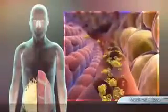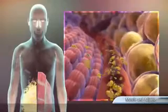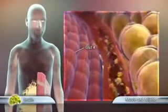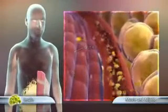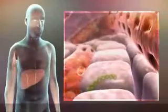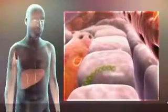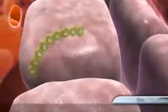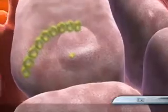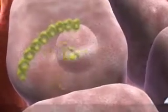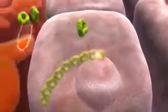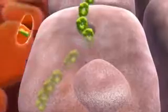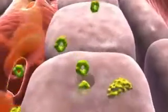In skeletal muscle and adipose tissue, insulin stimulates glucose uptake into the cells. In the fasting state, the liver helps maintain normal blood glucose levels by hepatic gluconeogenesis and glycogenolysis, which result in the release of glucose into the blood.